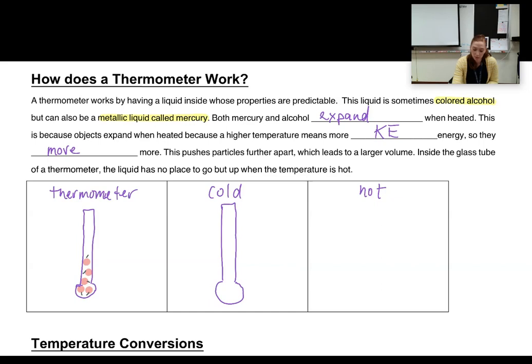When our thermometer is in a cold substance, remember particles are moving slower, which means they're going to be closer together and have fewer collisions. And that's going to make our liquid inside have a smaller volume.